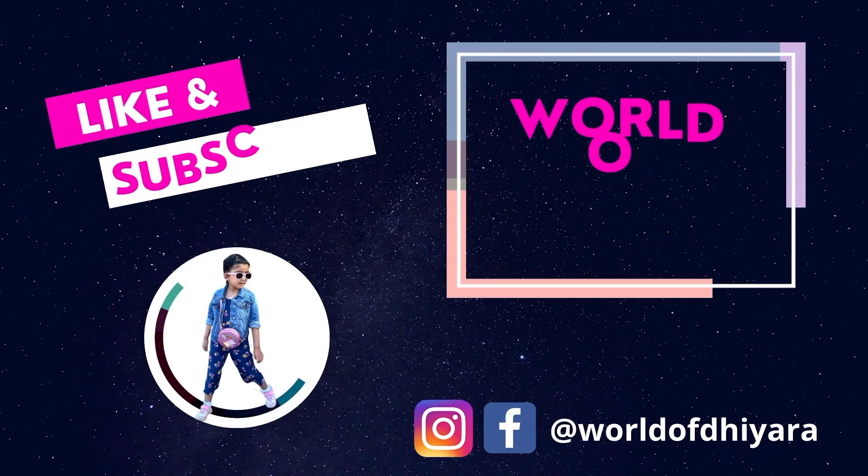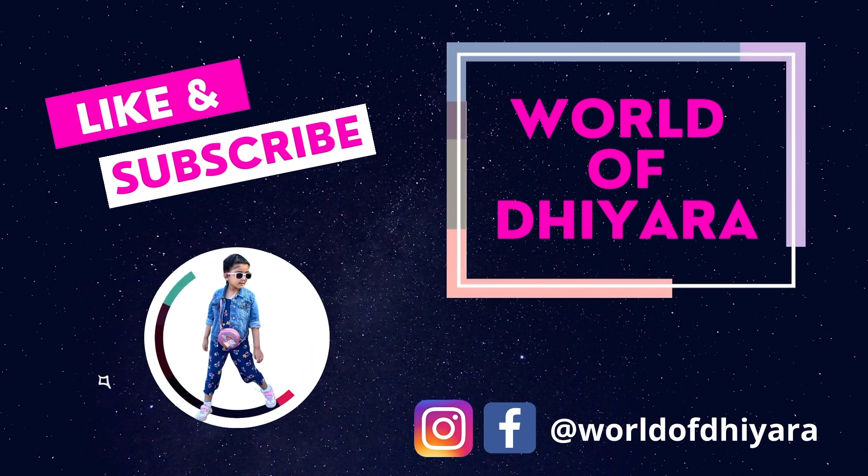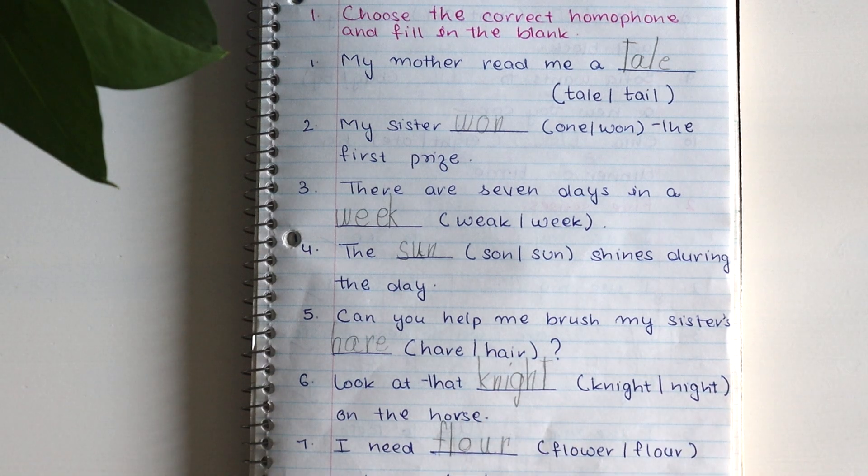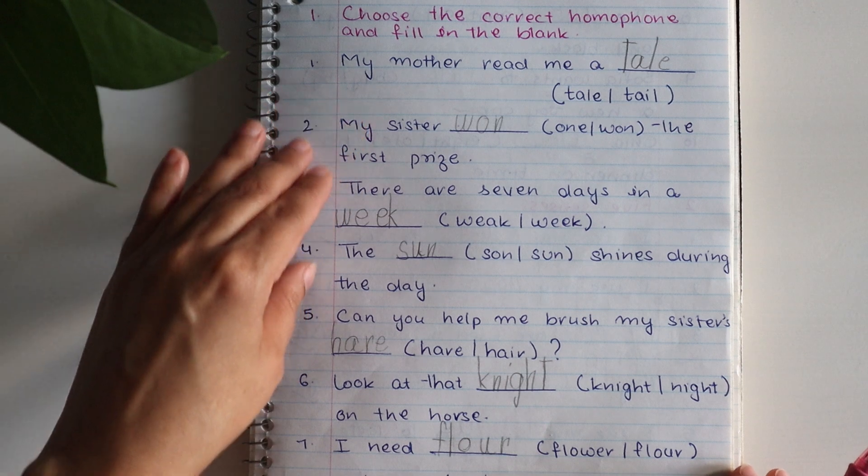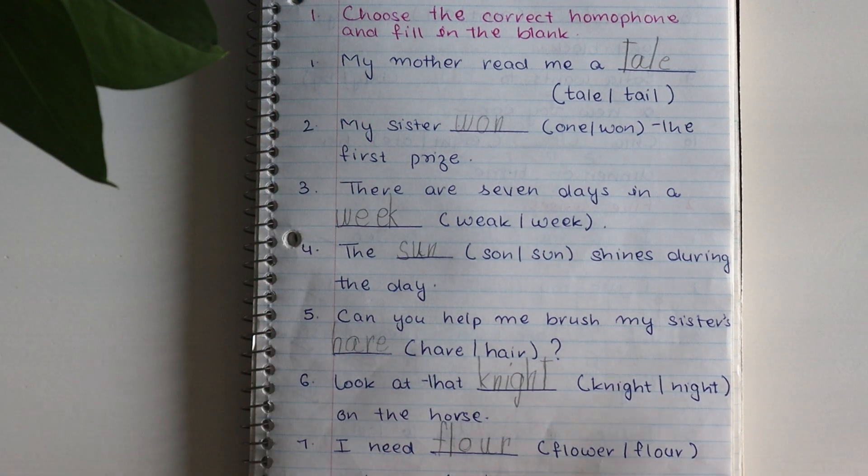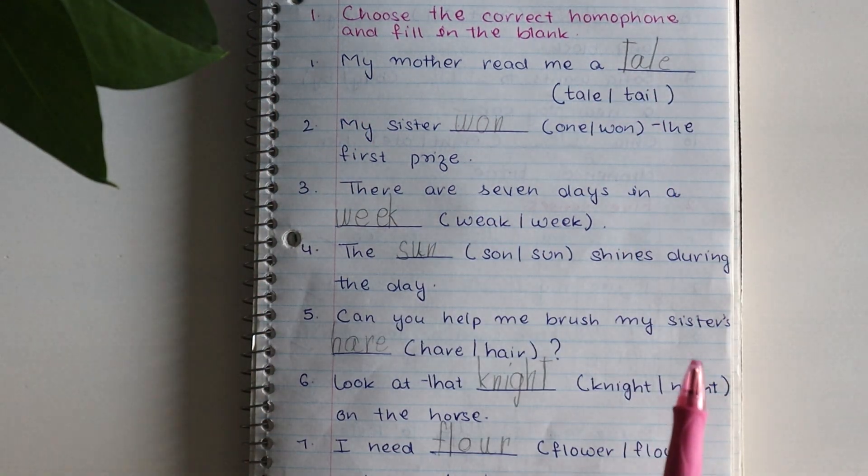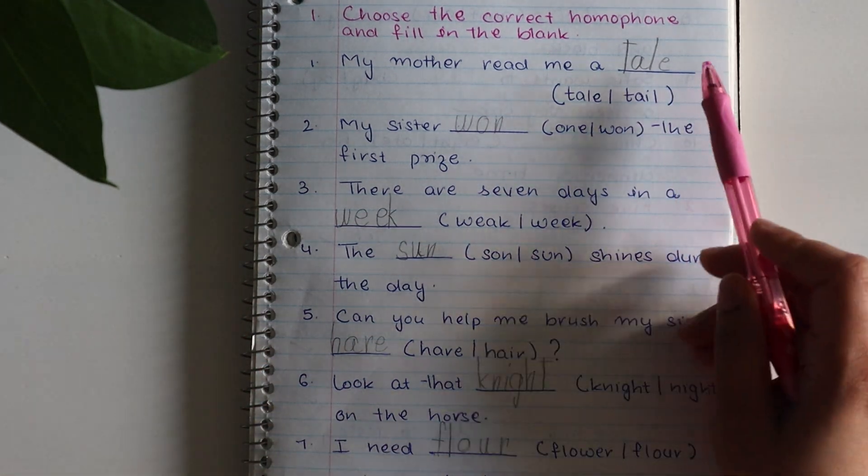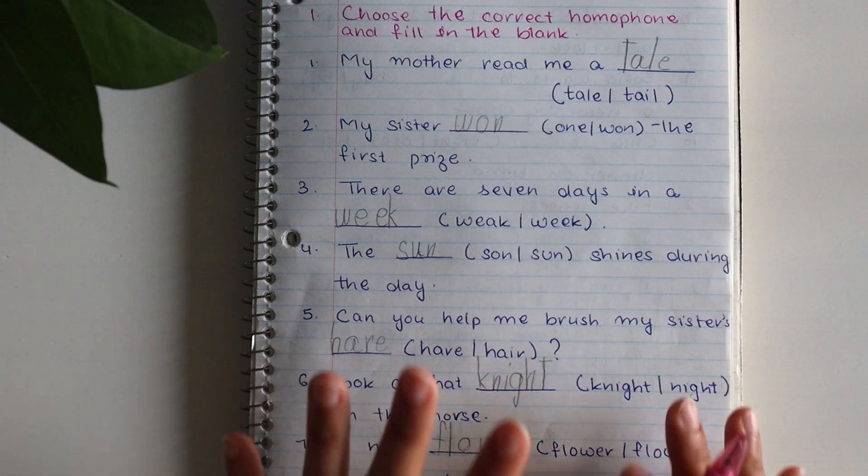You can easily customize these worksheets according to your age group. The first worksheet is for homophones. We have choose the correct homophone and fill in the blanks. You can see here I have written some sentences and there is a blank space, so the right homophones will be used to fill the blanks.